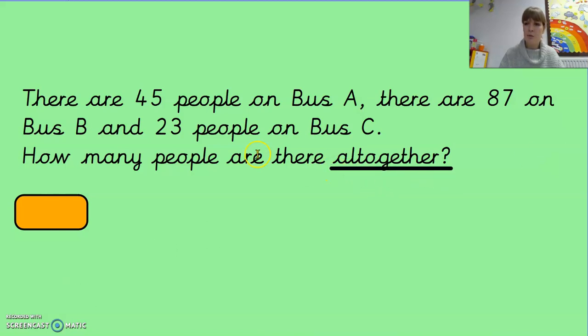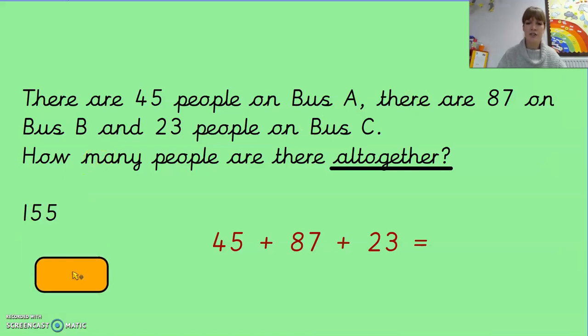I need to add them all together. So I do 45 add 87 add 23. Now you can do this in a number of ways. You can use your column addition to help you with this one or you can do it mentally. Up to you. Let's see what the answer is. It's 155.